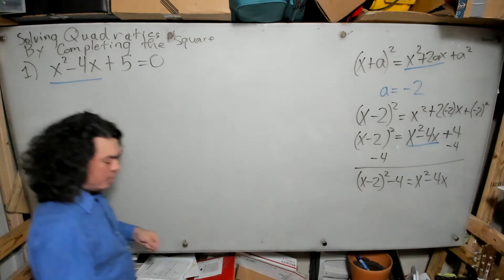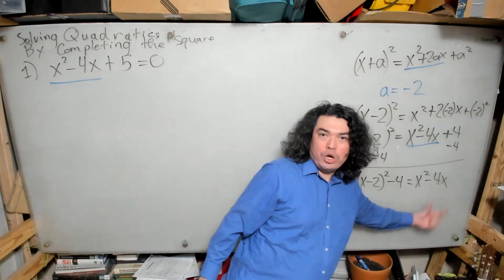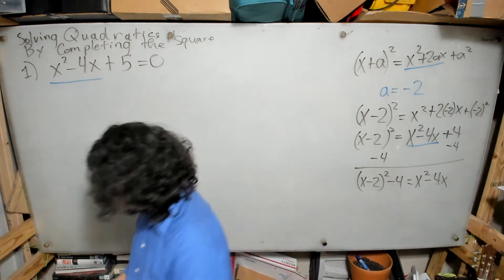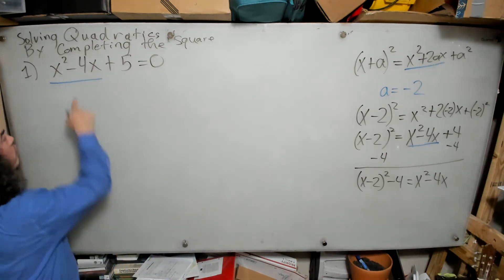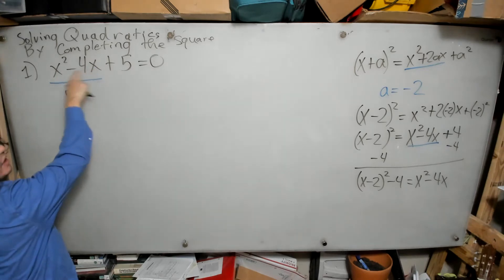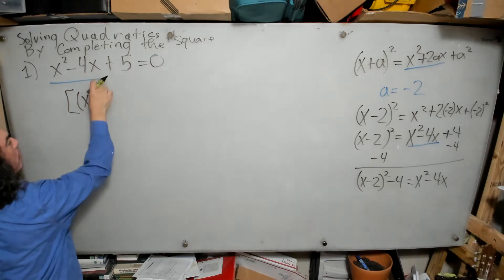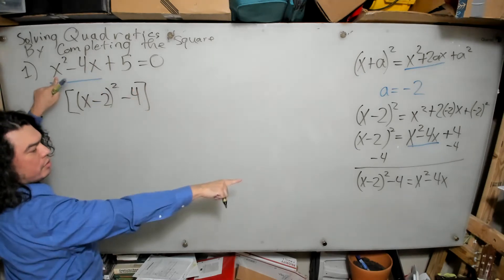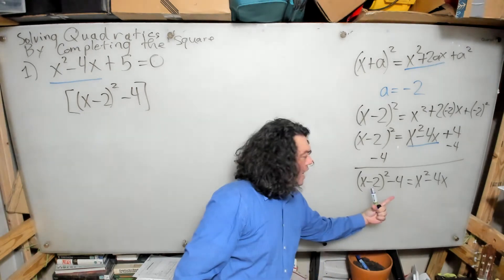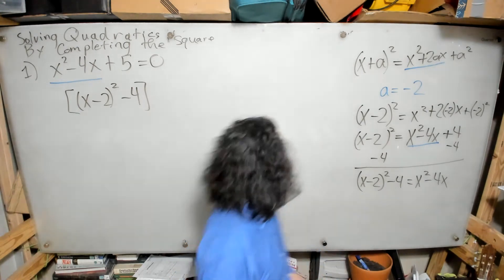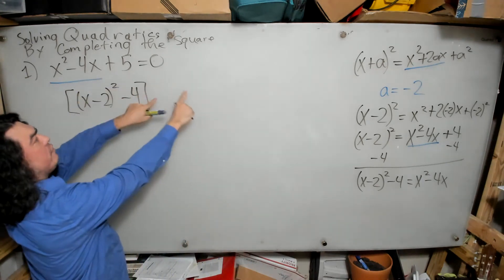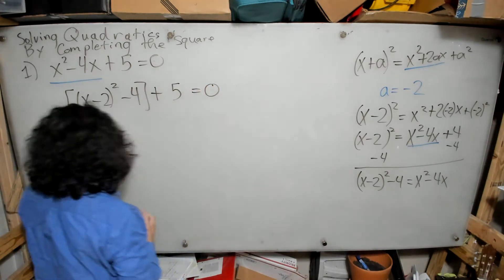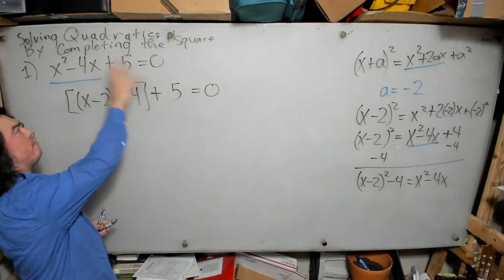This is where we get all the advantage. I take the expression x squared minus 4x in the original equation and replace it with x minus 2 squared minus 4. So I can write that as x minus 2 squared minus 4, and then I bring down the plus 5 and the equals zero.